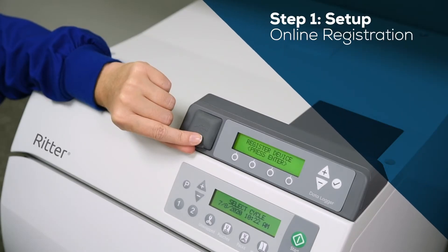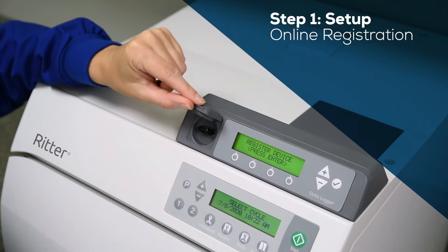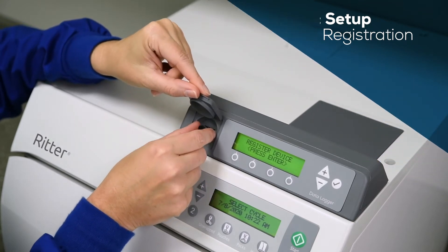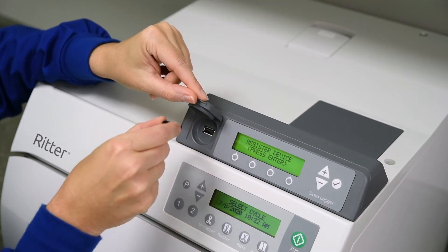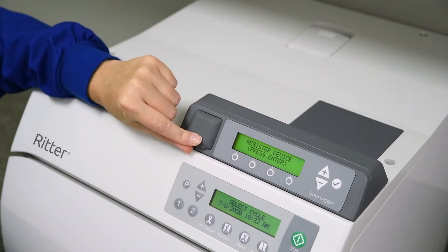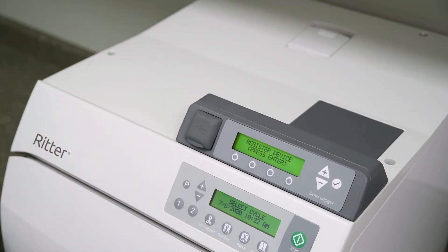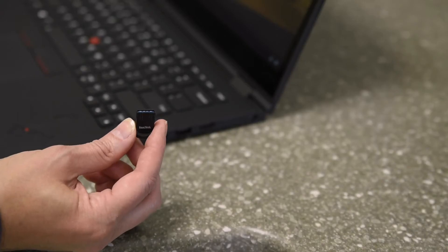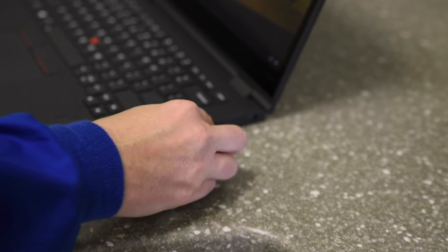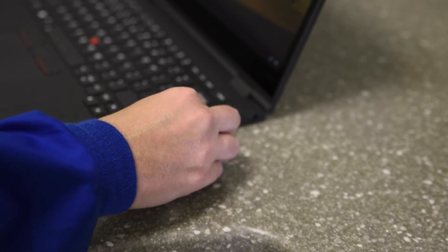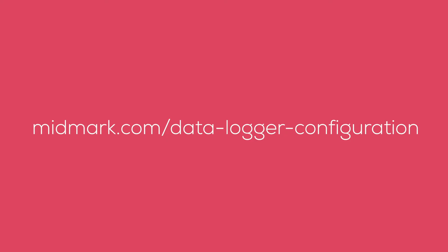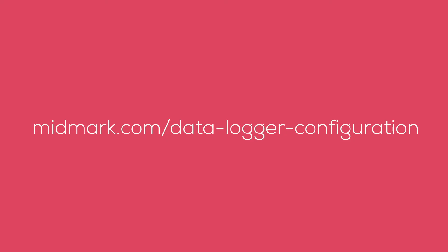To begin the online registration process, first remove the USB device from the sterilizer data logger. Transfer the USB device to an internet-enabled computer and navigate to the URL shown on screen.